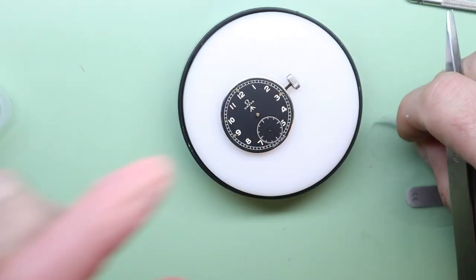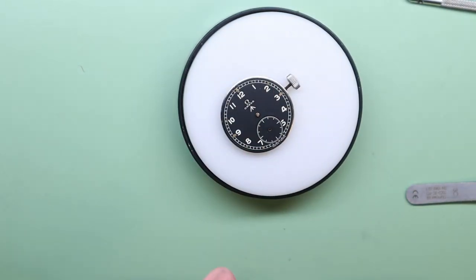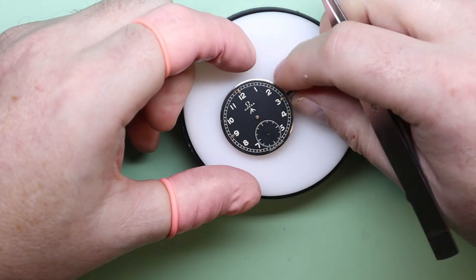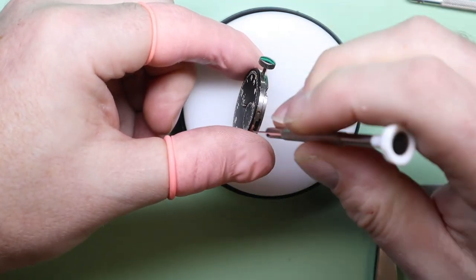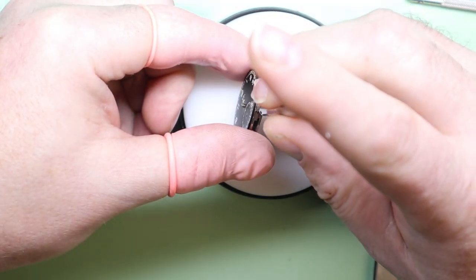Now in order to remove the dial there are two screws on the side of the movement plate. We loosen those off so that we can remove the dial, and then we'll tighten them back down just before the movement goes into the cleaner.